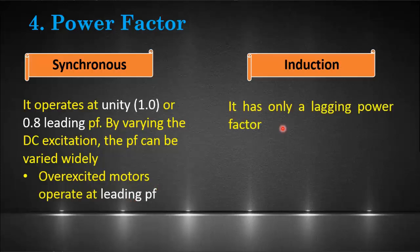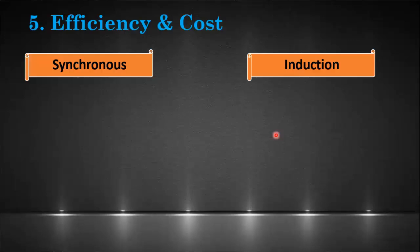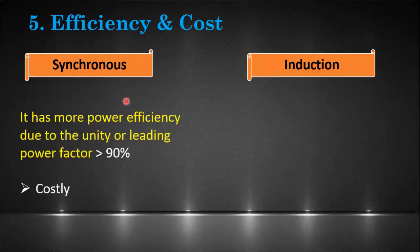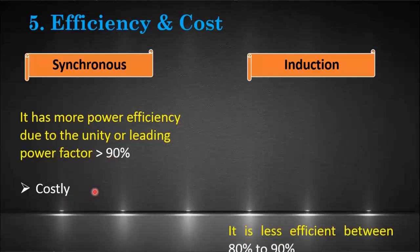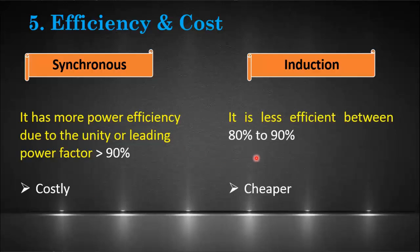The final difference is based on efficiency and cost. The synchronous motor is more power-efficient due to its leading or unity power factor, with efficiency normally above 90%. Synchronous motors are more costly compared to induction motors. Induction motors are considered less efficient, with efficiency ranging between 80% and 90%, but they are cheaper than synchronous motors.